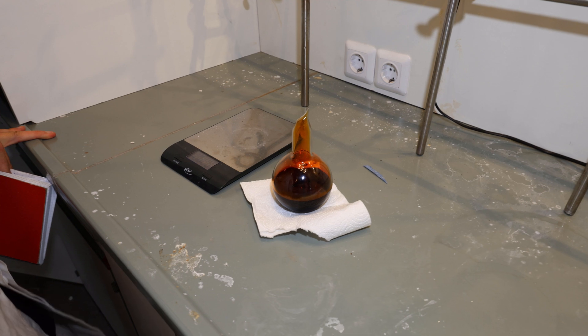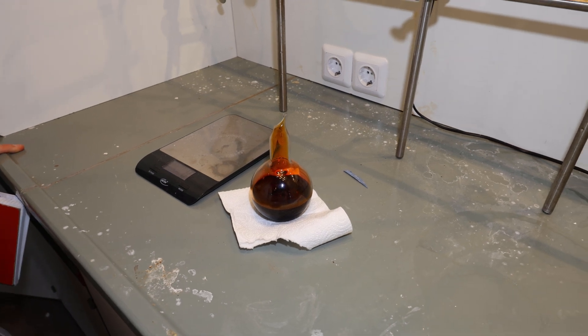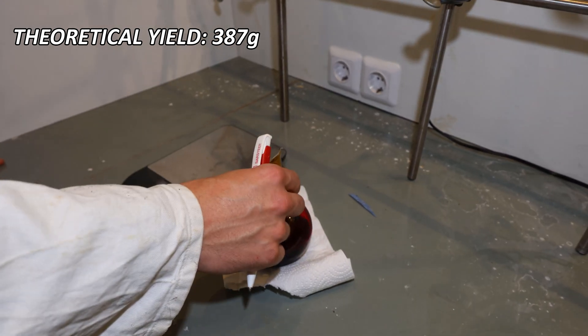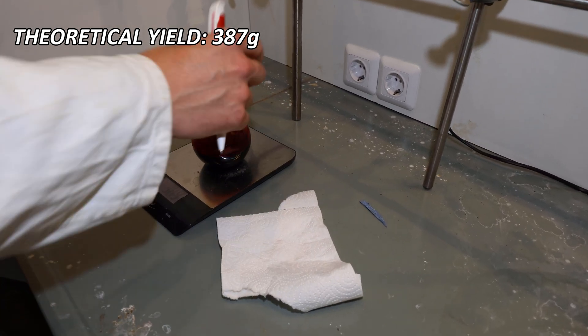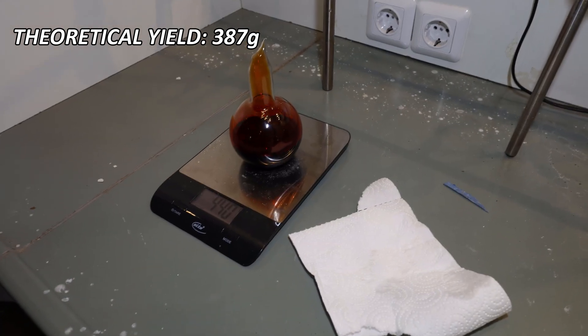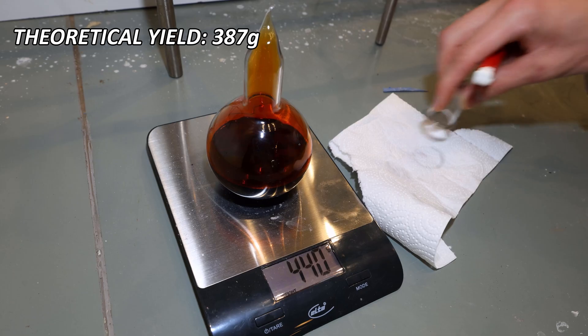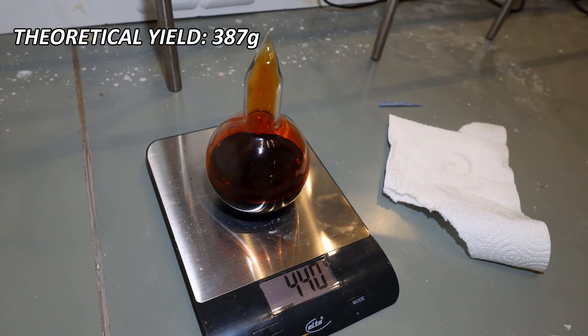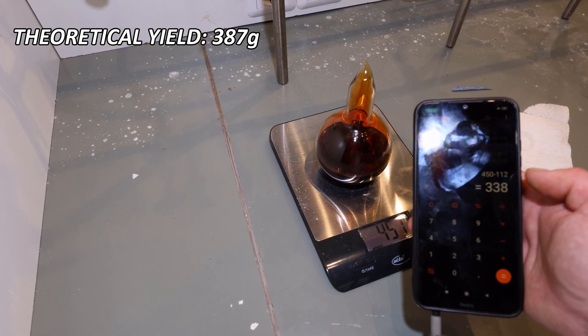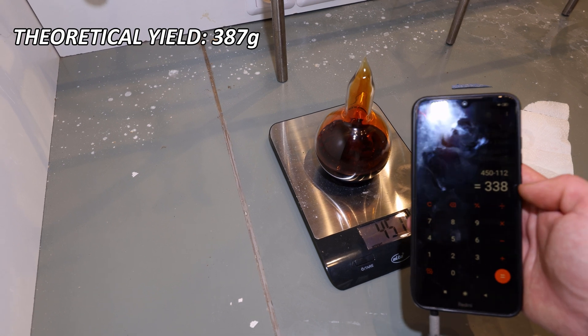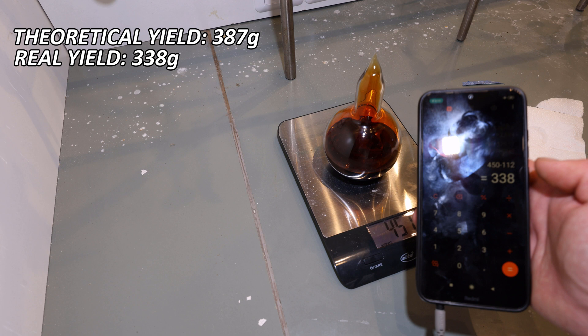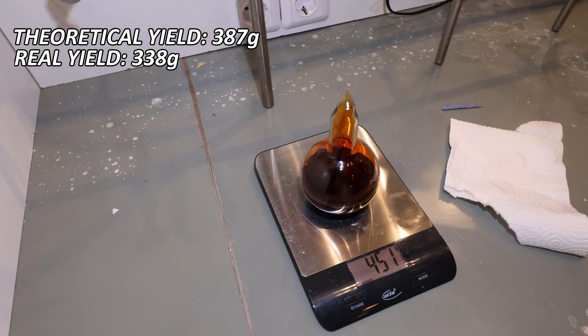We expect the yield of 387 grams. Let's see how much we got now. How much is the flask? The flask is 112 grams. So we have now 338 grams of bromine.